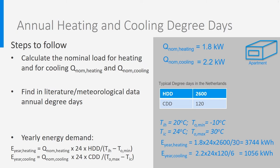T_omin is the lowest outdoor temperature used to calculate the nominal powers — in our example, minus 10 degrees. In cooling mode, T_omax is the highest outdoor temperature — we took 30 degrees. So now we can make the calculation, which leads to 3744 kilowatt-hours yearly heating demand and 1056 kilowatt-hours yearly cooling demand.